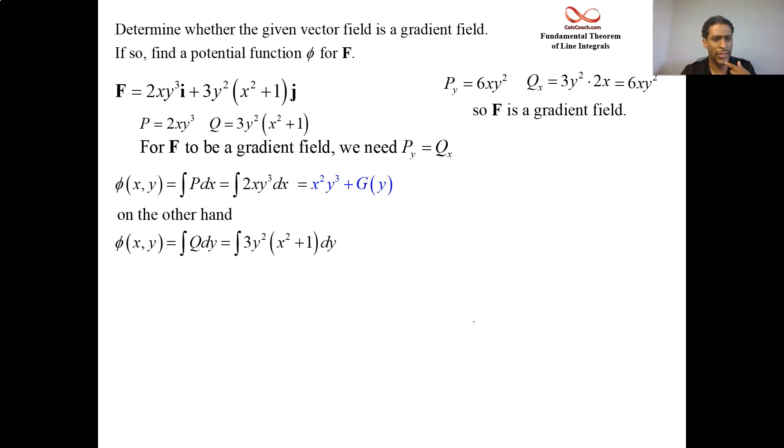If we integrate q, we're going to do it with respect to y though. We're going to end up with y³ over 3, so the 3s will cancel out. The x² + 1 is a constant. And then we can add, potentially, some function who has x's in it, because with respect to y, that h(x) is constant. These both are equal to phi.